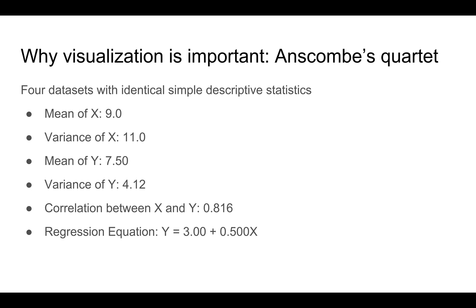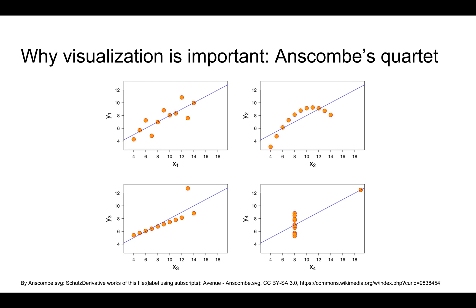This data set consists of four sets of data. The mean and variance of x and y are the same across all four. The correlation between x and y is also the same, as well as the regression equation. However, if you plot the four data sets, they look very, very different, as you can see here.